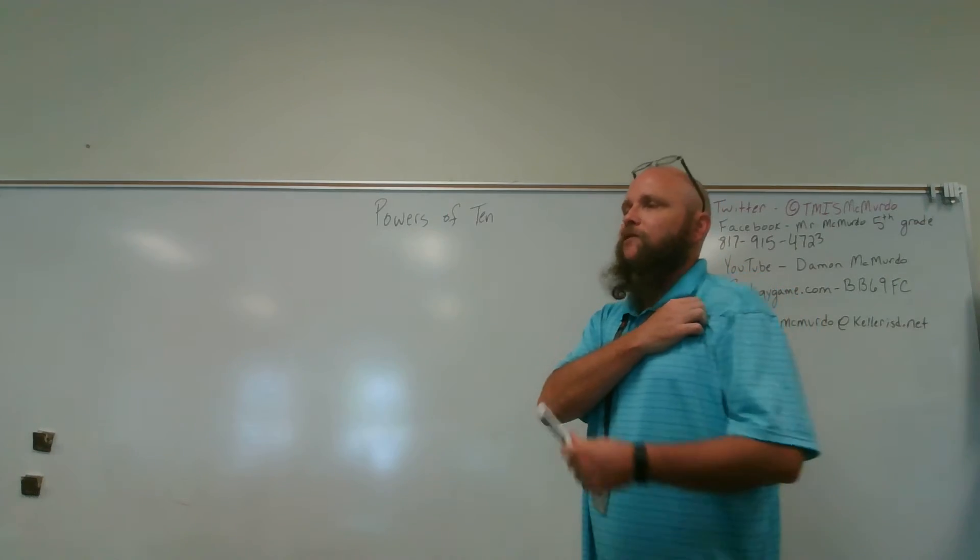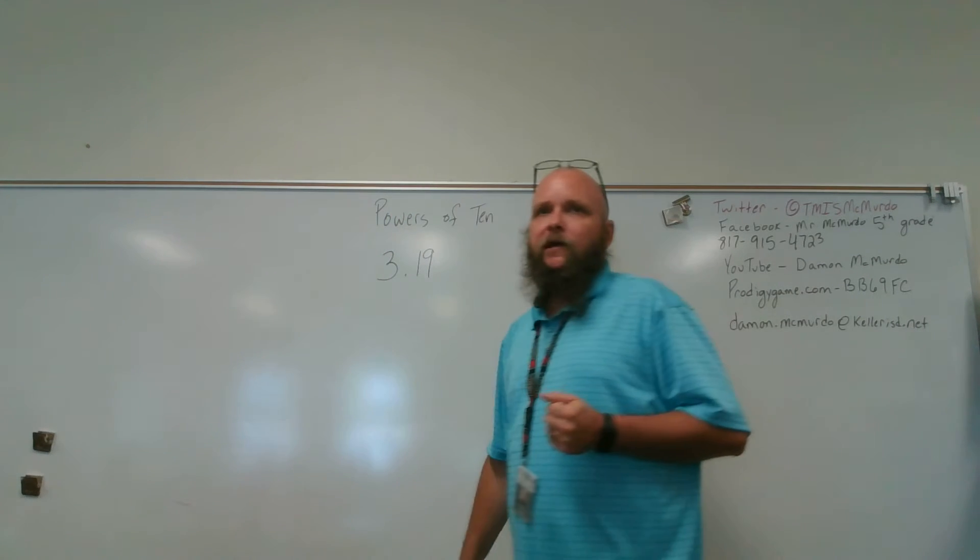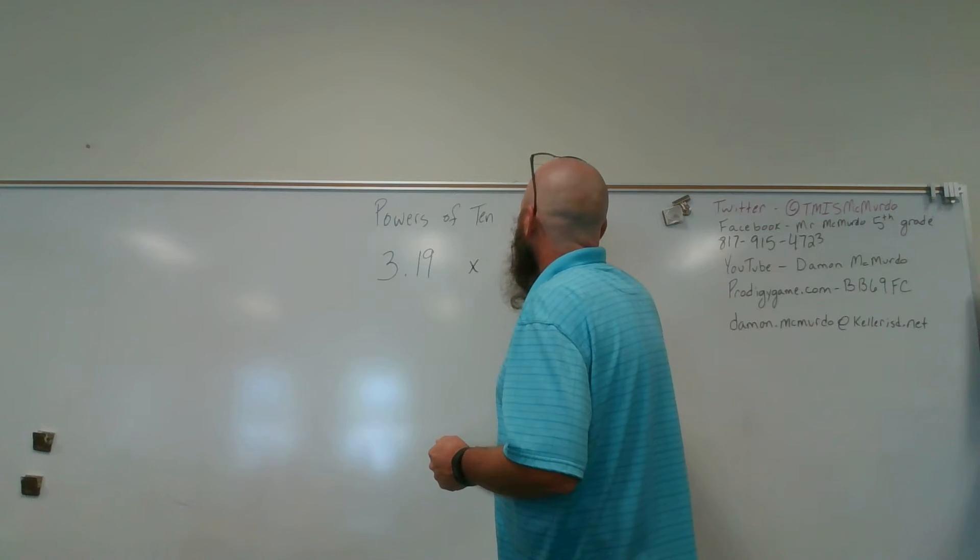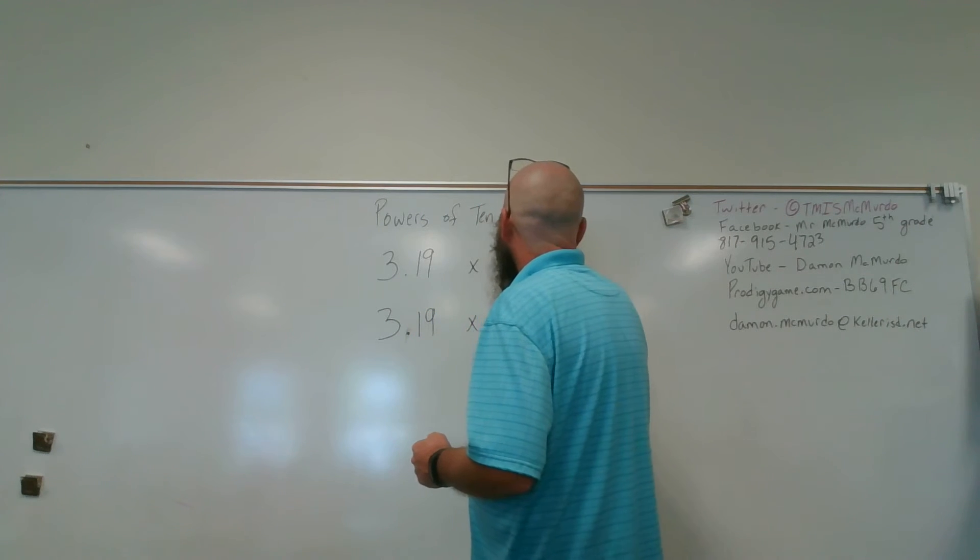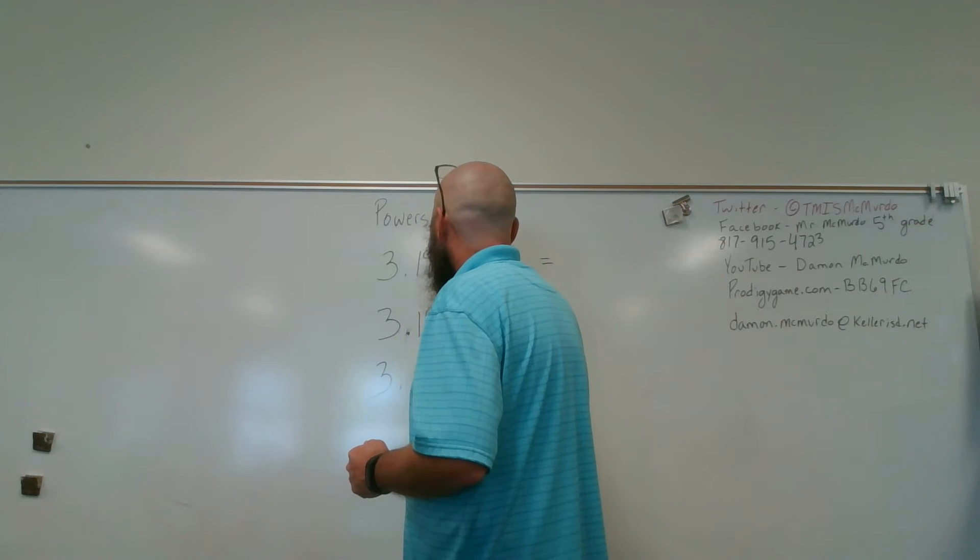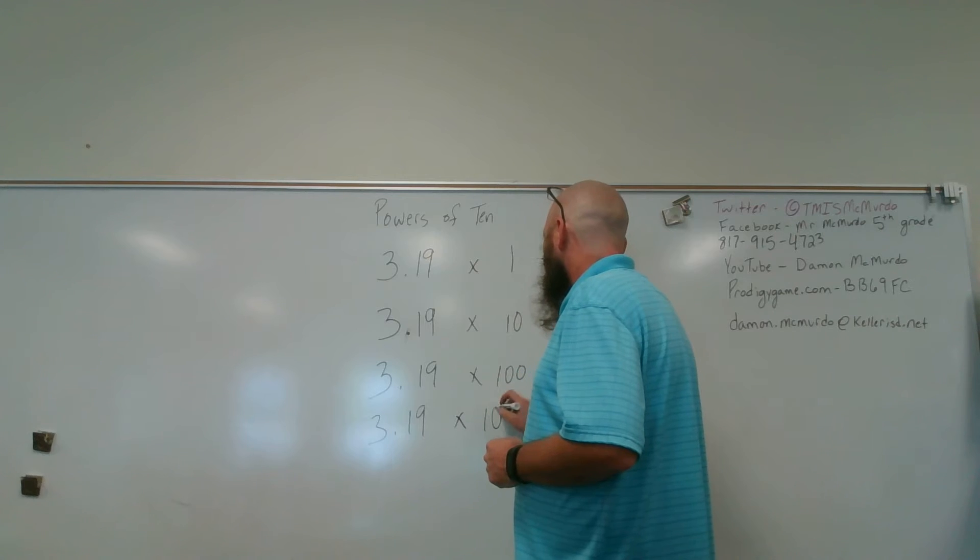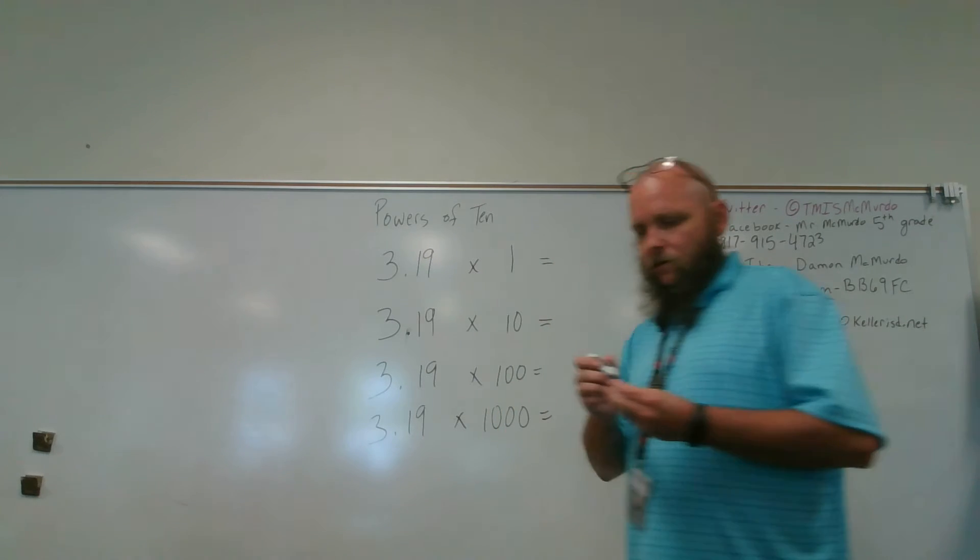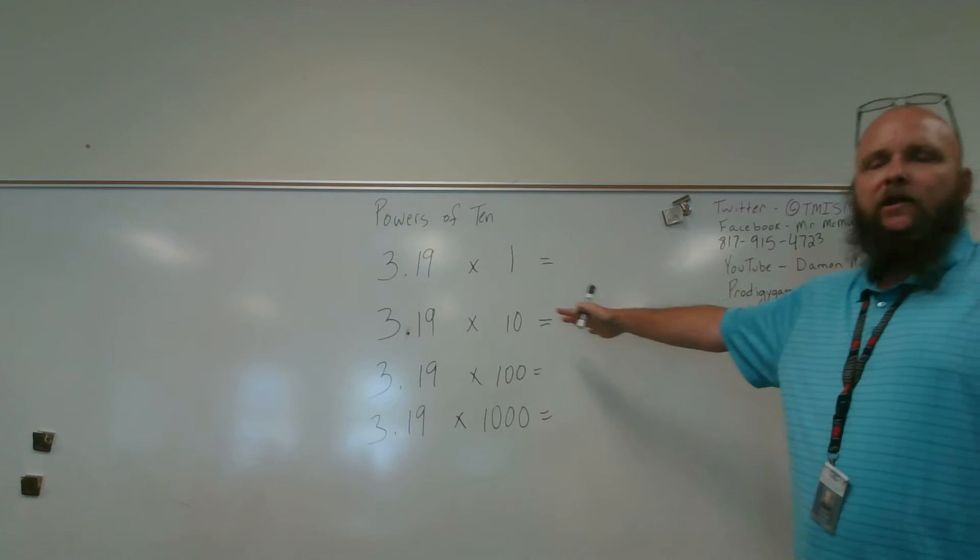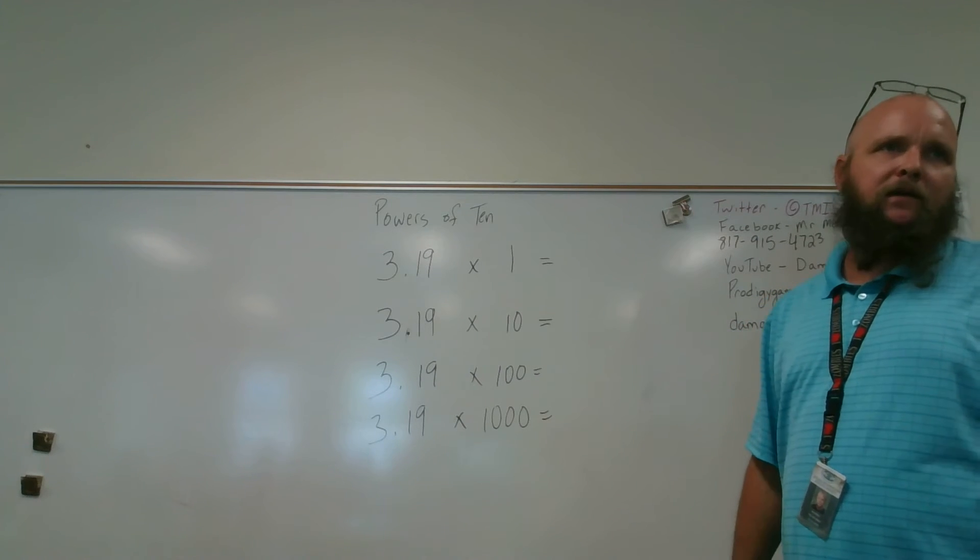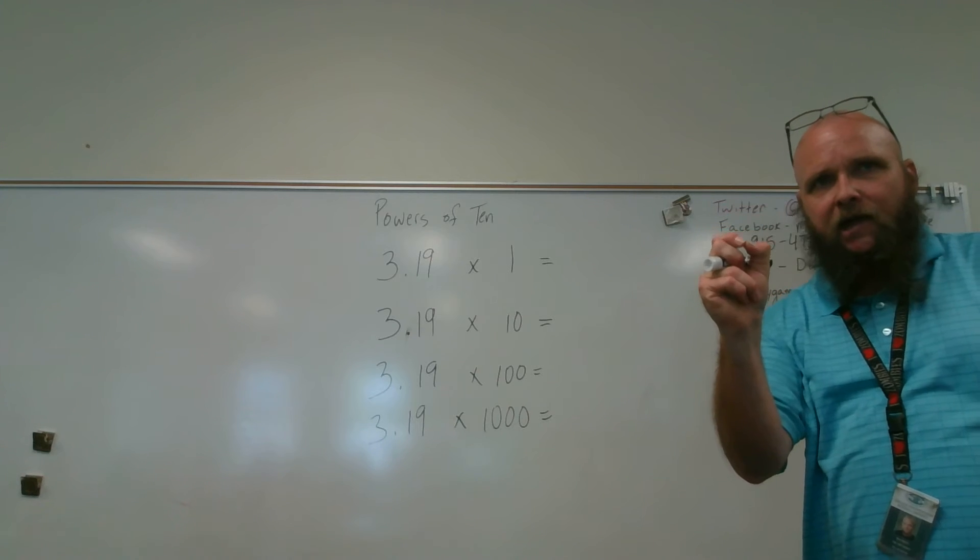Guess what happens when you multiply 8 times 1,000? What are you doing then? What is 8 times 1,000? 8,000. So then I moved the decimal point from here, where it was, three places to the right. Y'all did this. You've all done this. You're all like, duh, Mr. McMurray, this is so easy. So, I moved it from right behind the 8 to the right one place.